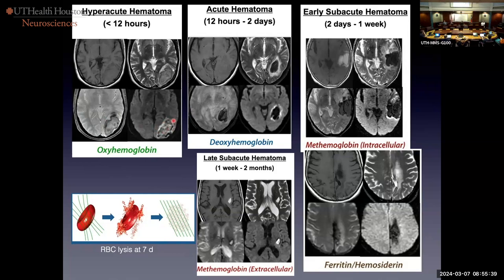At seven days, something really cool happens: all the red blood cells lose their membrane integrity and begin to lyse. Around one week, the hematoma becomes bright on T1 because of methemoglobin and stays bright on T2. On the GRE you see a black ring around the hemorrhage — that's a hemosiderin ring — a big clue. As the hematoma ages, it gets liquefied, turns more like fluid, and the hemosiderin ring collapses. Eventually all you have is a little smear of ferritin and hemosiderin.